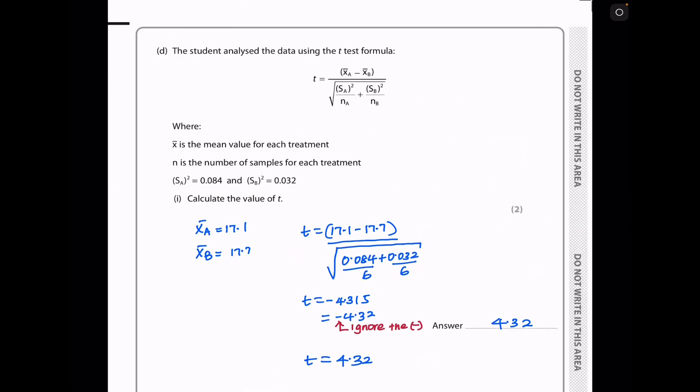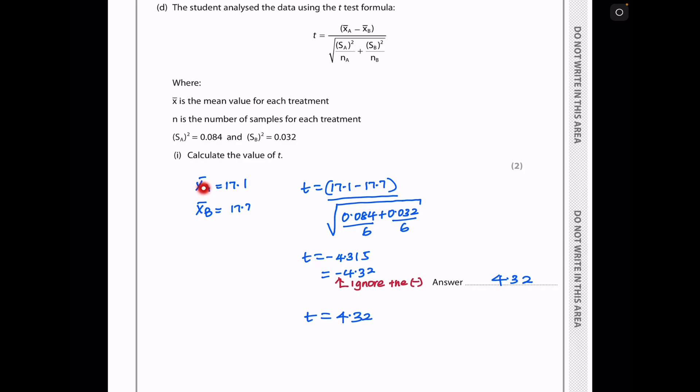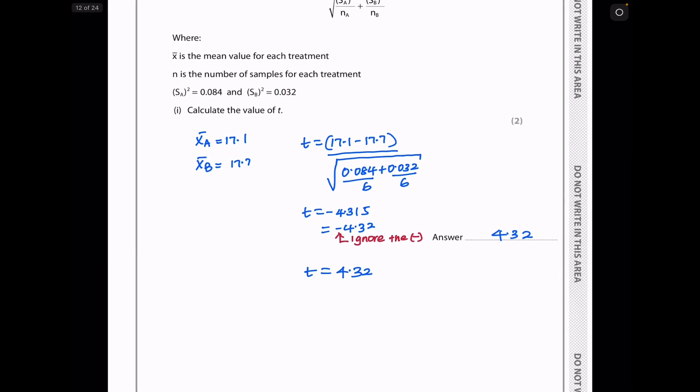And in part D, they say the student analyzed the data using the t-test formula, which is given here, where x bar is the mean value of each treatment, n is the number of samples for each treatment. This and that are given, and they want you to calculate the value of t. So I chose this to be 17.1 and that to be 17.7, which I substituted for that and that here. And then divide it through by the square root of this one squared, divide by 6, plus that square, divide by 6. And I got negative 4.315. But I can ignore the negative and write this as 4.32 to three significant figures as my answer.